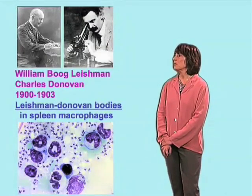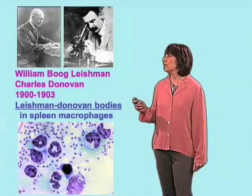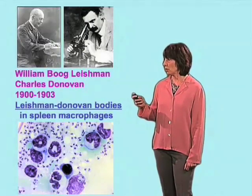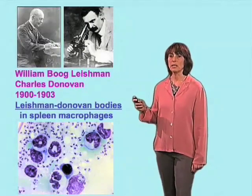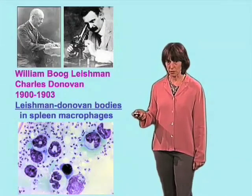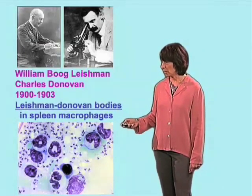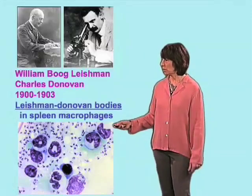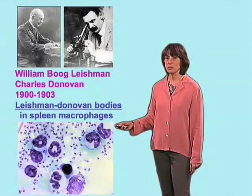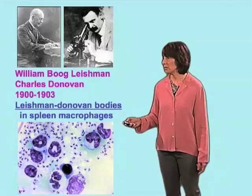It was the British physician William Leishman, who analyzed the material from patients in India, and also simultaneously the Irish investigator Charles Donovan. They realized that macrophages present in the spleen of these patients were heavily loaded with these organisms, which they recognized as similar to trypanosomes. This was the first indication that this was a parasitic disease.